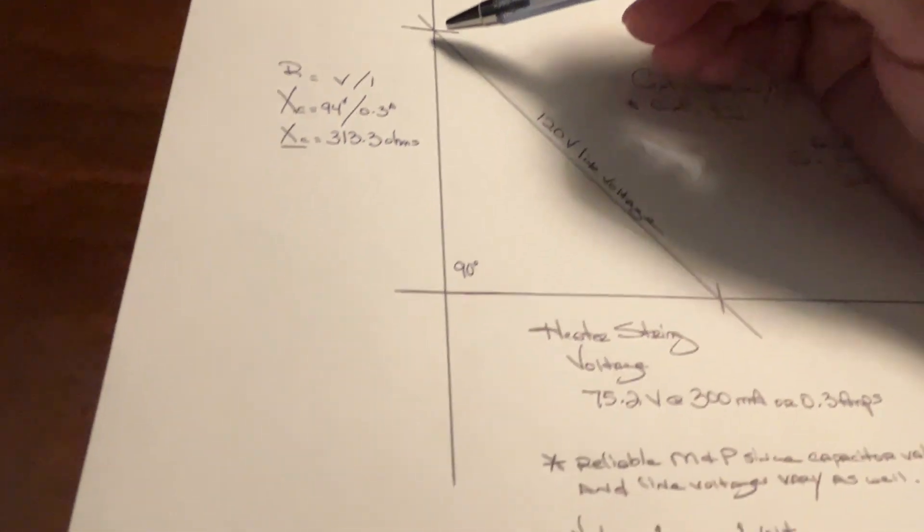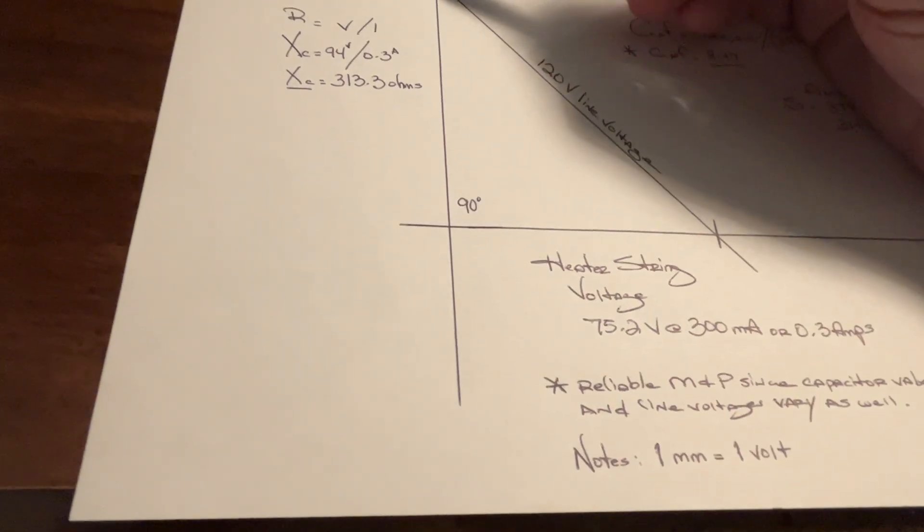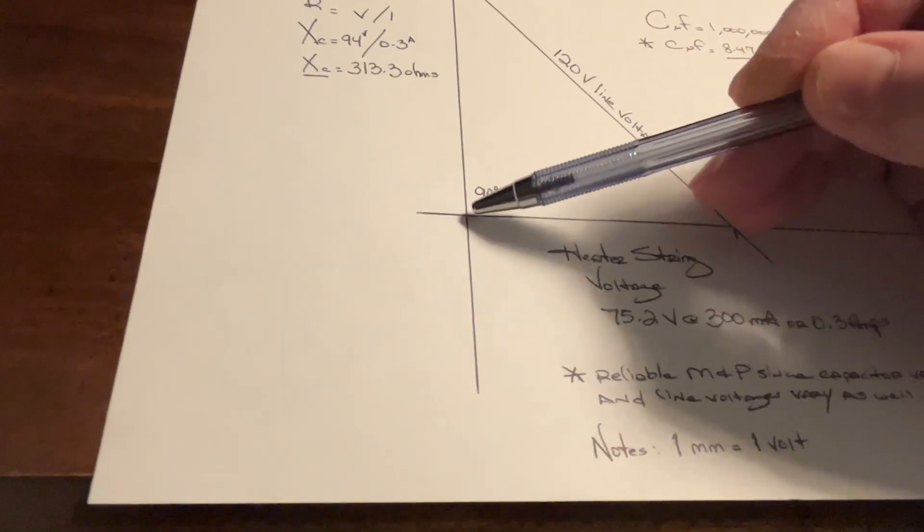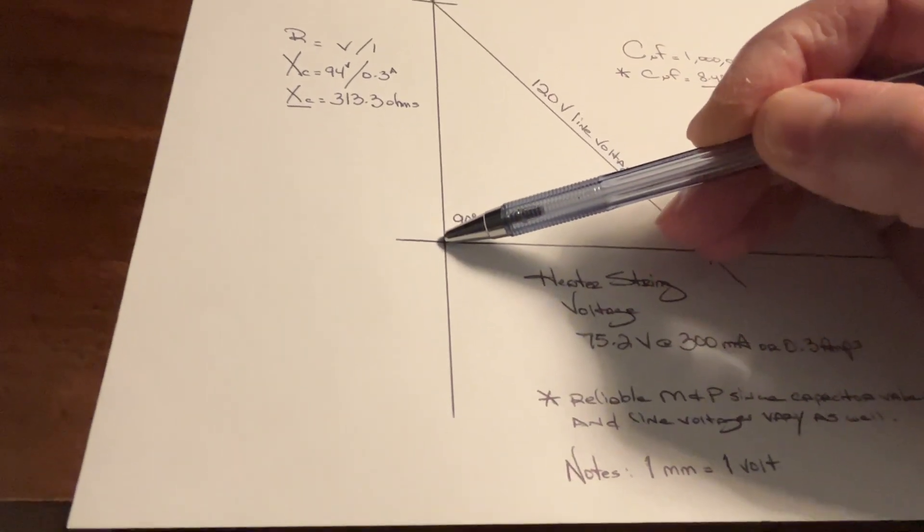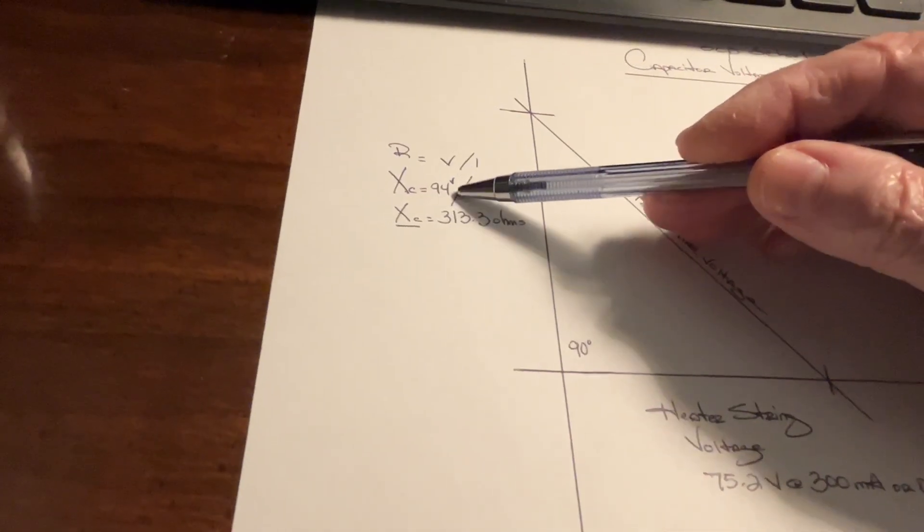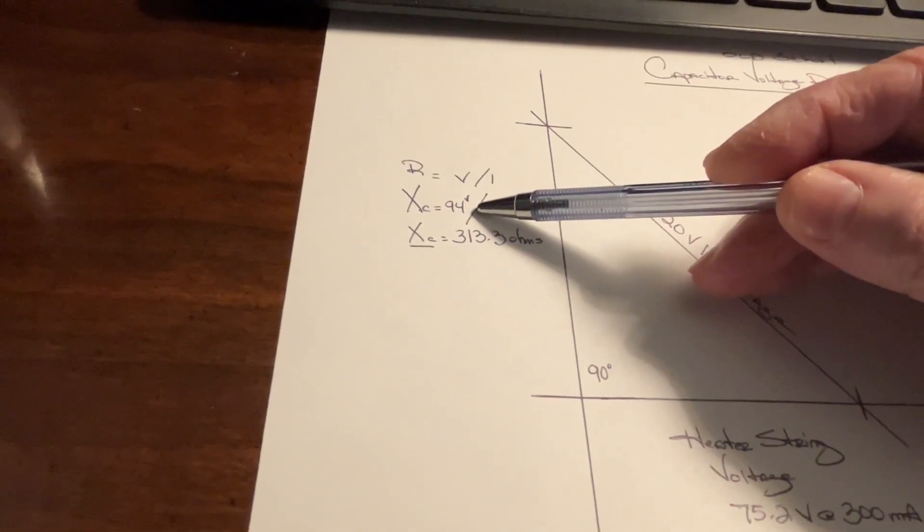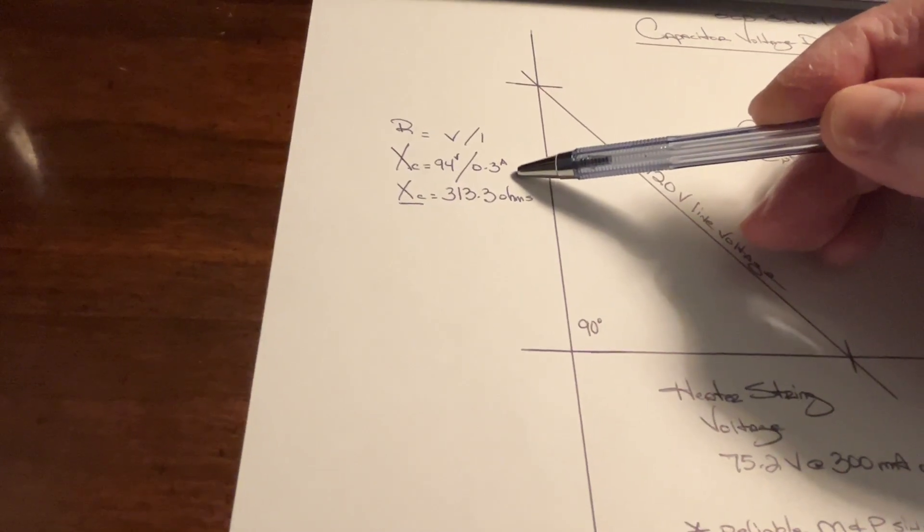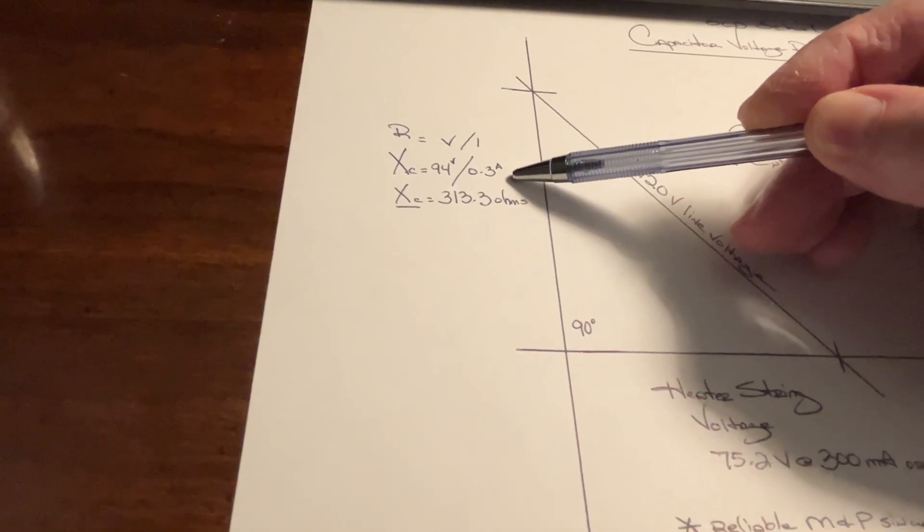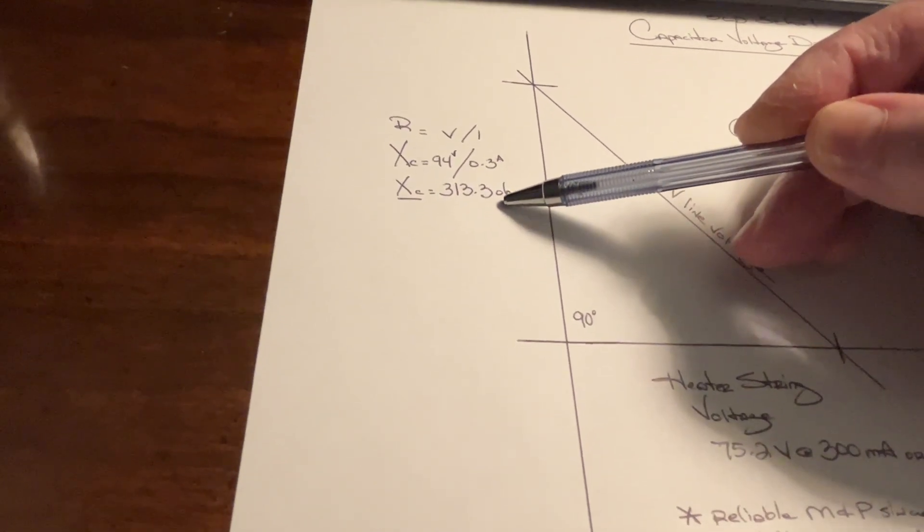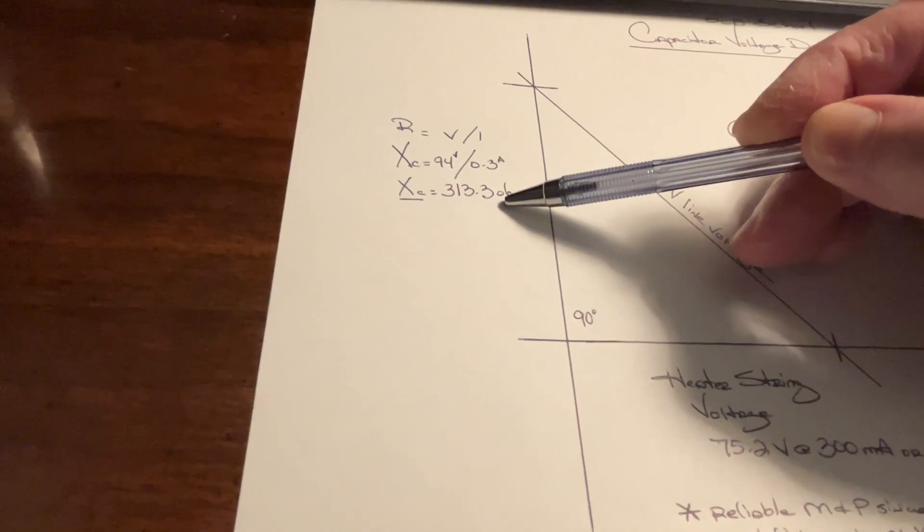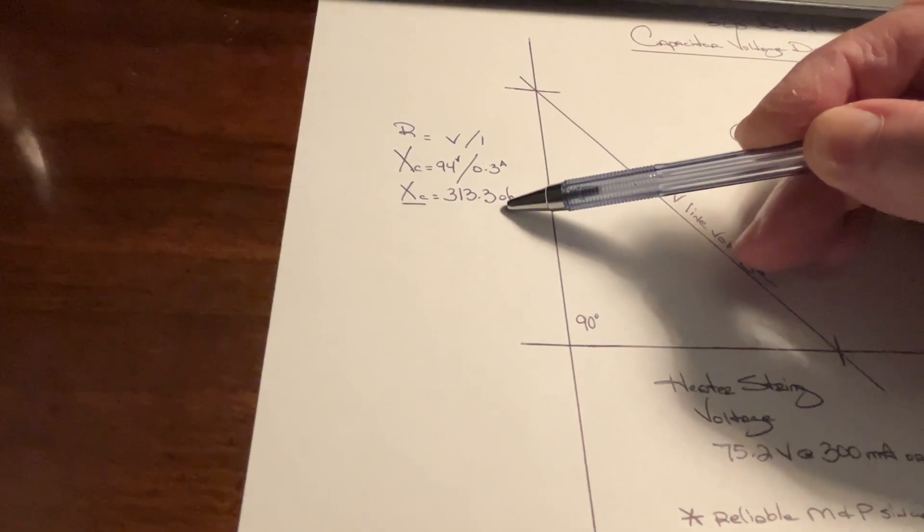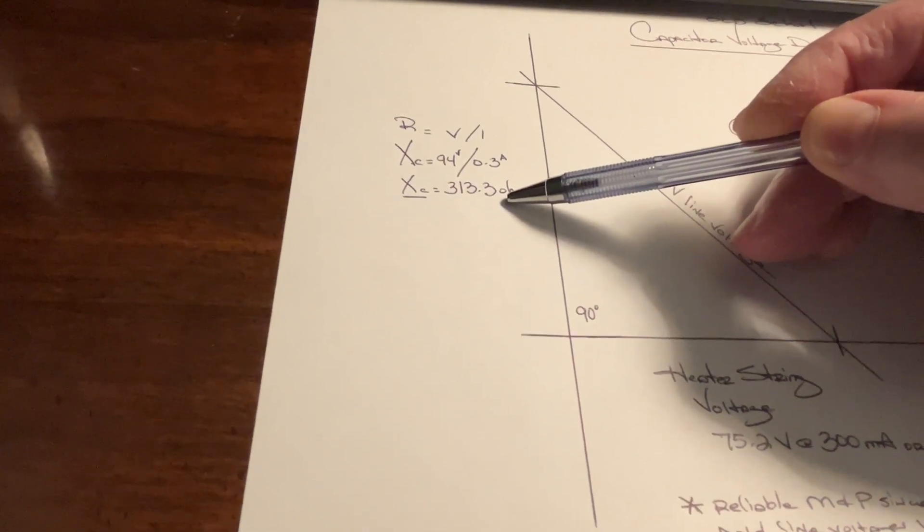And then I'll measure the distance between this point and this point, and that comes out to 94 millimeters, which equals 94 volts. Divide that by the current of 0.3 amps gives me roughly 313 ohms for the capacitive reactance.